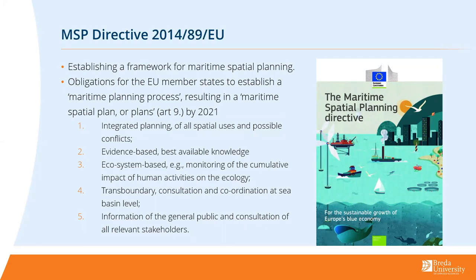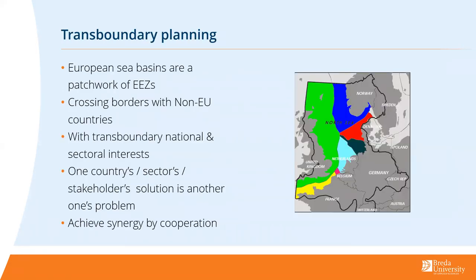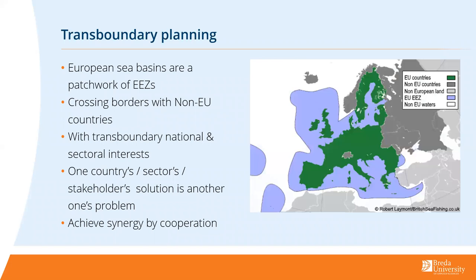This is a massive challenge. You've got this European sea basin — a patchwork of economic zones crossing borders, including non-EU countries. There are lots of transboundary, national and sectoral interests where one country's or sector's solution is another one's problem, and you have to try to achieve synergy by cooperating. The entire blue area shown roughly represents the area that needs to have an MSP in place in terms of process and outcome by next year — and not all countries are done yet.